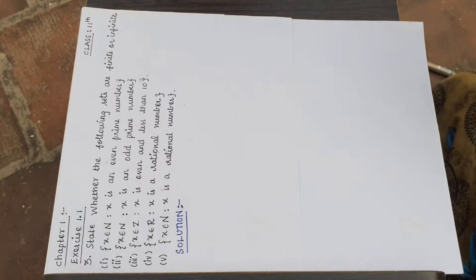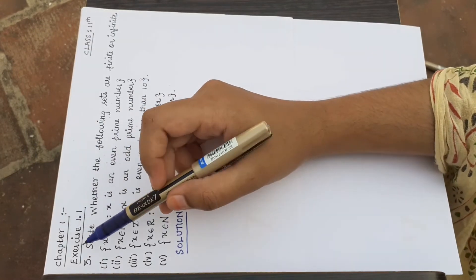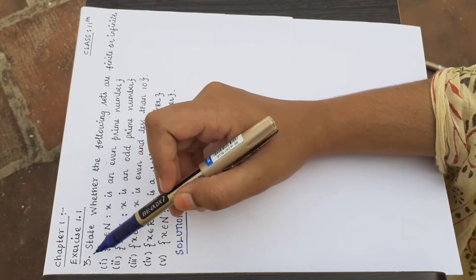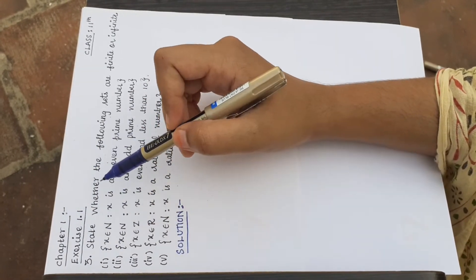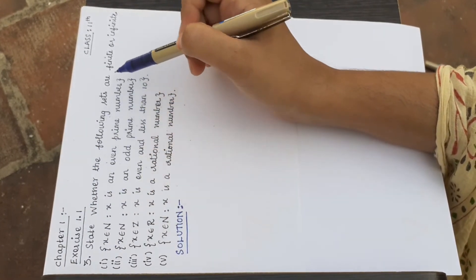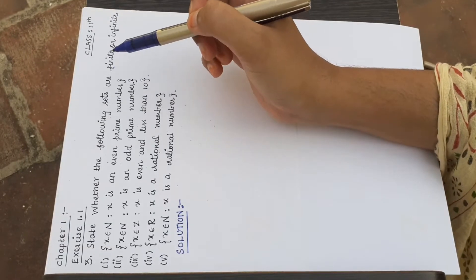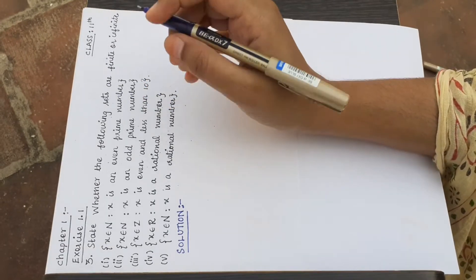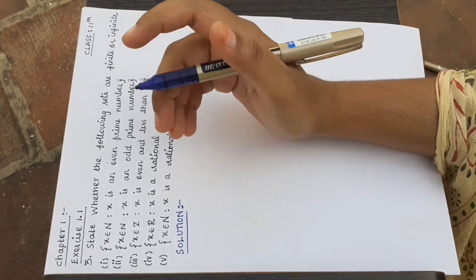Welcome to Rifast Max. 11th Standard Chapter 1, Exercise 1.1, Question Number 3. State whether the following sets are finite or infinite. We will explain whether each set is finite or infinite.